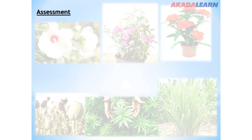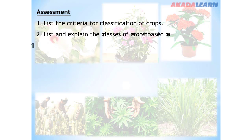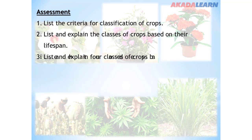Assessment. Number 1: List the criteria for classification of crops. Number 2: List and explain the classes of crops based on their lifespan. Number 3: List and explain four classes of crops based on their uses.